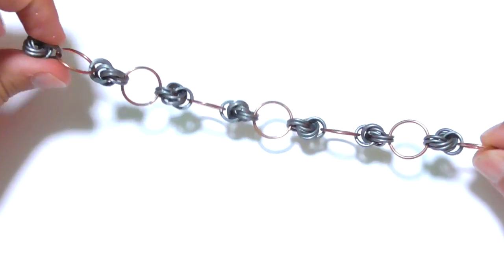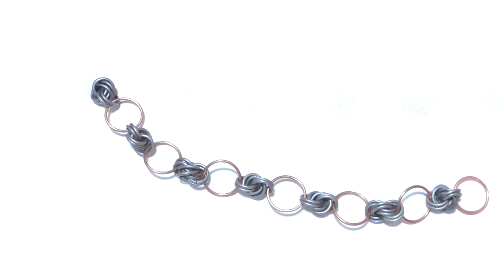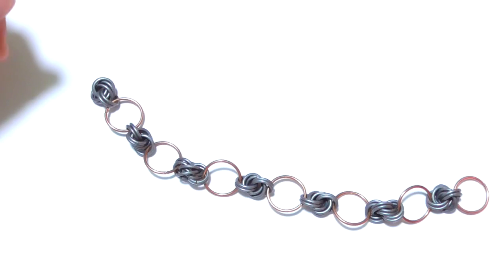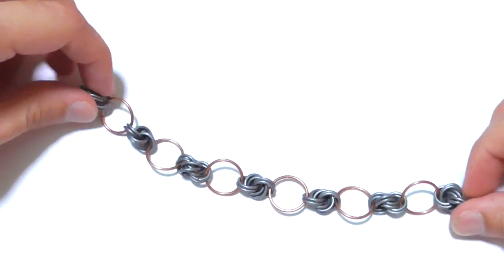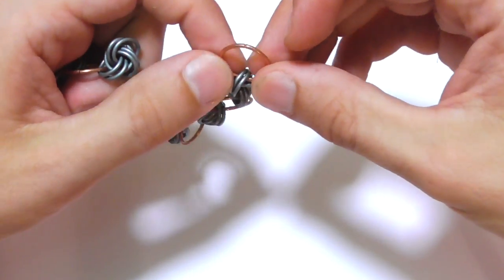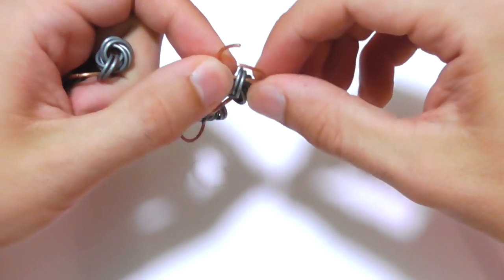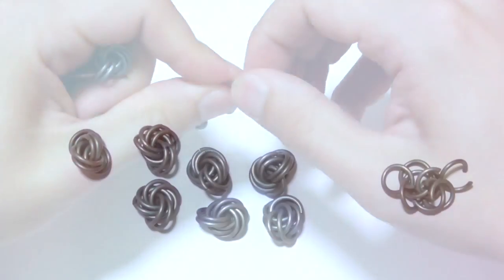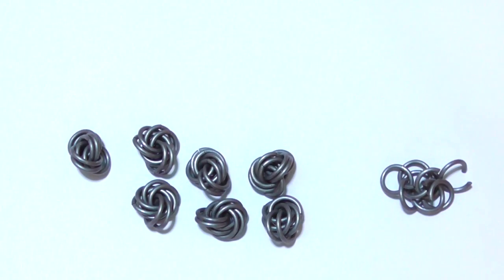That's how it looks on a wrist, and a big advantage is that we don't need any additional lock. I can use this ring to lock the bracelet on the wrist.